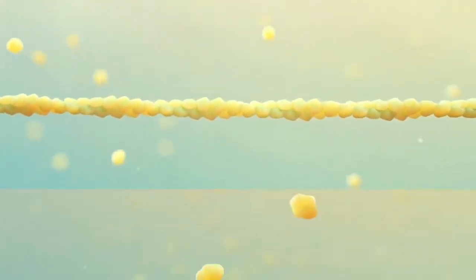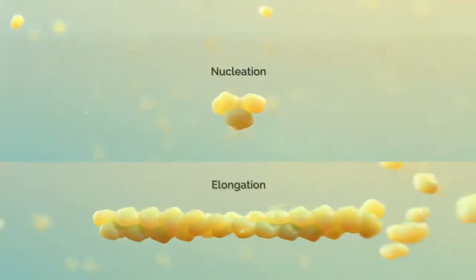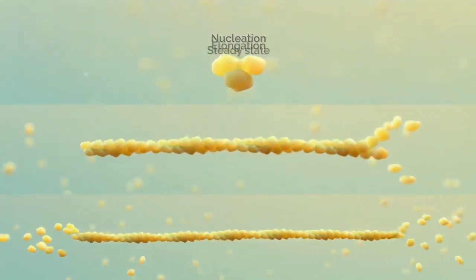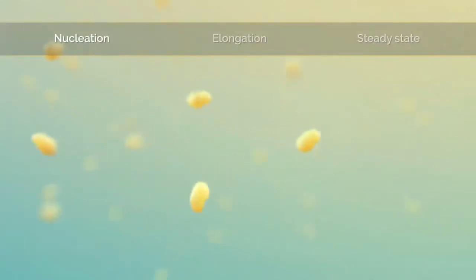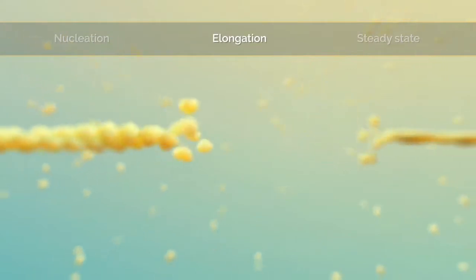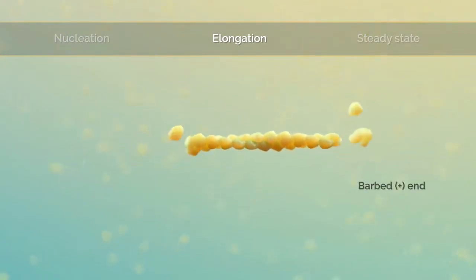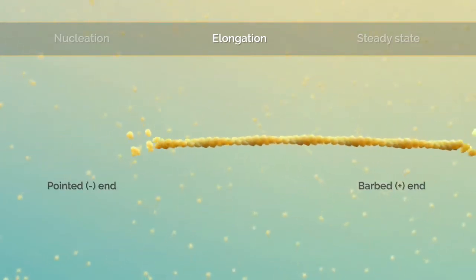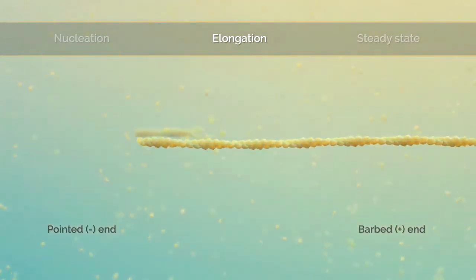Nucleation, elongation, and steady state. Nucleation occurs as three ATP-bound G-actin monomers form trimers. Then rapid linear polymerization occurs in a process called elongation. G-actin can bind reversibly to either end of the growing filament, known as the barbed or plus end and the pointed or minus end, but monomers preferentially bind to the barbed end.